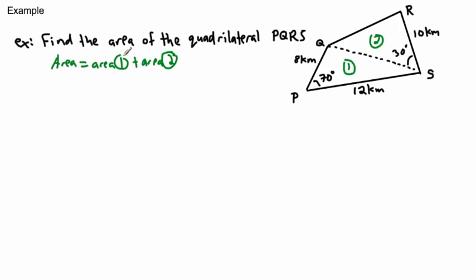Area 1 is going to be easy. The formula for the area of a triangle is one-half times a times b times sine C — it needs a side, an angle, and a side. For this triangle we already have a side, an angle, and a side, so Area 1 is just one-half times those two sides times the sine of that angle.